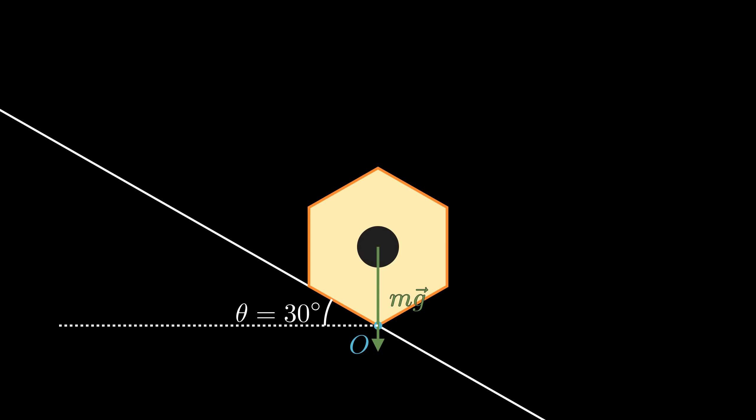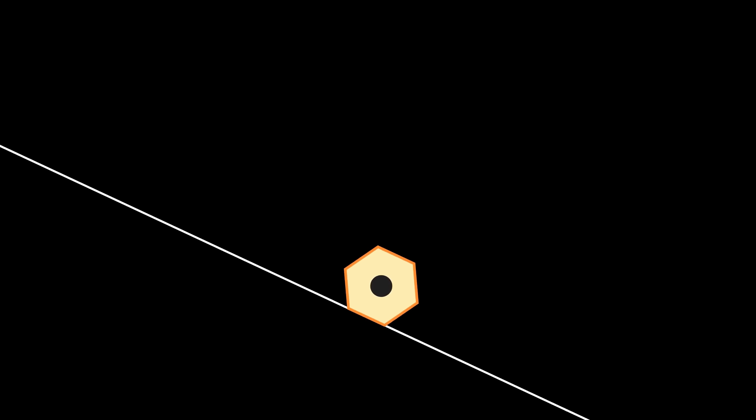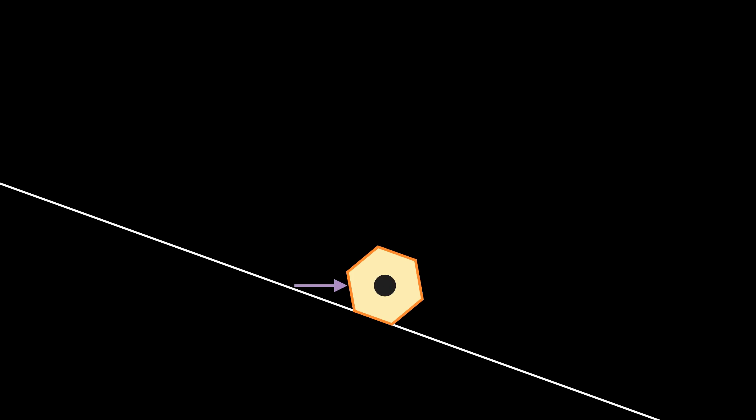But the more interesting thing is: what if we push it slightly, just like how we could accidentally touch the pencil in real life? So at a smaller angle — let's say 20 degrees — let's give the pencil a slight initial push. We can observe that the pencil starts rolling and rolling and rolling, and the rolling motion never really stops. Apparently, the pencil will keep on rolling even if the angle is less than 30 degrees, and that rolling motion will continue indefinitely long until it falls off the table.